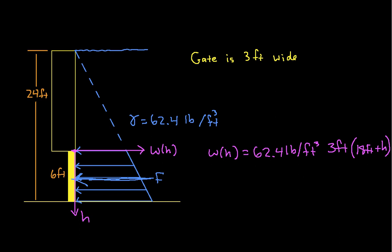So this gives us an expression for this W of H. And I can simplify this to be 3,369.6 pounds per foot, plus 187.2 pounds per square foot, times H.